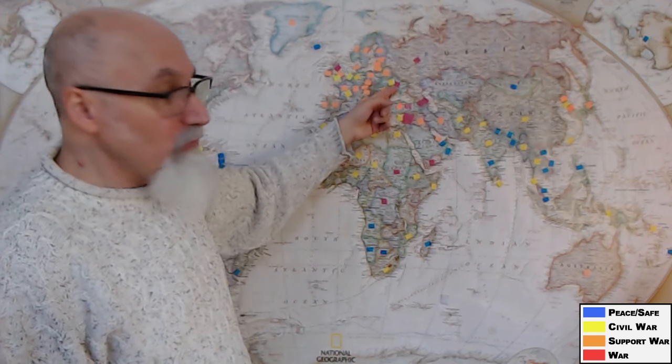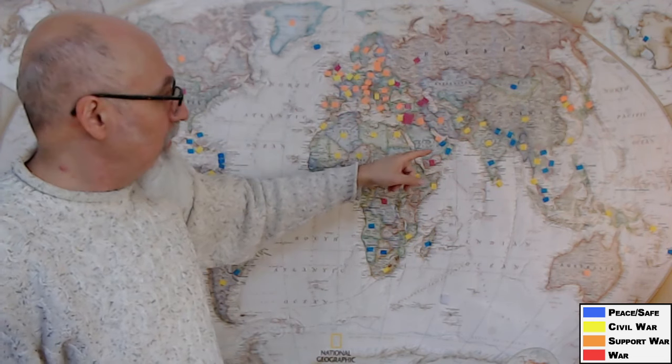The Nuland phone call during the Maidan coup, saying 'fuck the EU' and deciding who's going to become the leader in Ukraine—from day one, the United States has been dictating exactly what's going to happen with Ukraine. That's a proxy. Iran does not have that power over Yemen. Yemen does what Yemen wants to do.